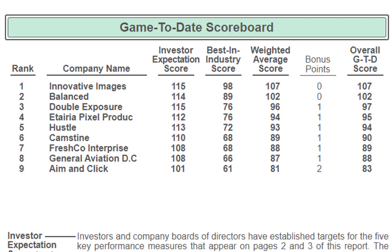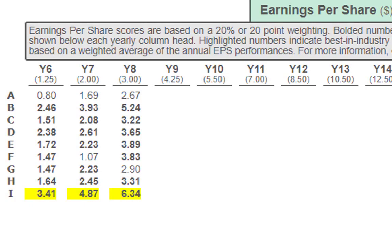Let's take a look at earnings per share, return on equity, and stock price. For earnings per share, everyone met expectations except company A and company G, but both appear to be moving in the right direction. Company A went from 169 in year 7 to 267 in year 8, and company G went from 223 to 290 — so don't be discouraged. Company I has almost double the earnings per share of everyone else besides company B, and company B is right there knocking on their door.